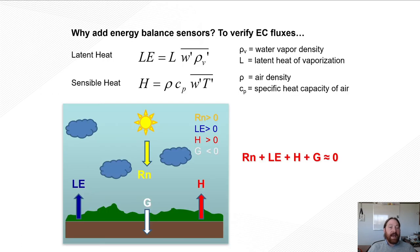So why would you want to add energy balance sensors? Well, really, this is to verify, help verify our EC fluxes. So are we partitioning, are our sensors accurately partitioning the incoming available energy into latent and sensible heat flux. If we're able to do that, if our sensors are perfect and we're capturing exactly what's coming in and how it's being partitioned, then Rn plus Le plus H plus G should equal approximately zero.